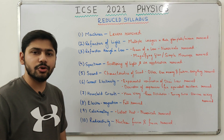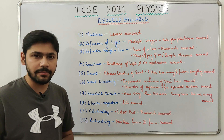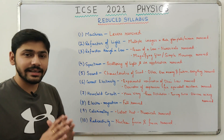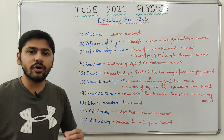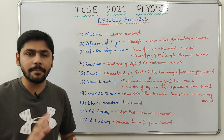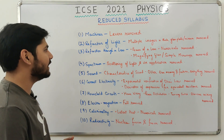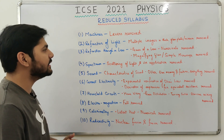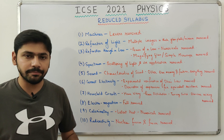Let's begin with the reduced syllabus, chapter by chapter. First, machines — levers have been removed, so you don't have to study anything regarding levers. Next, refraction of light — multiple images in a thick glass plate or mirror have been removed.